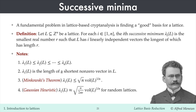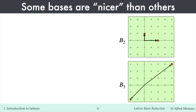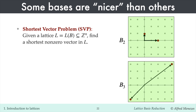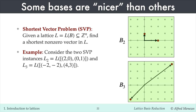The Gaussian heuristic refines this estimate, suggesting that in a random n-dimensional lattice, the shortest non-zero vectors are likely to be slightly shorter than the upper bound provided by Minkowski's theorem. As mentioned earlier, some lattice bases are nicer than others. Consider two instances of SVP with bases B2 and B3 — bases for the same lattice. When we use B2, it's immediately clear that (0,1) is a shortest non-zero vector in the lattice. On the other hand, if the lattice is presented with basis B3, then determining a shortest non-zero vector would require more work.